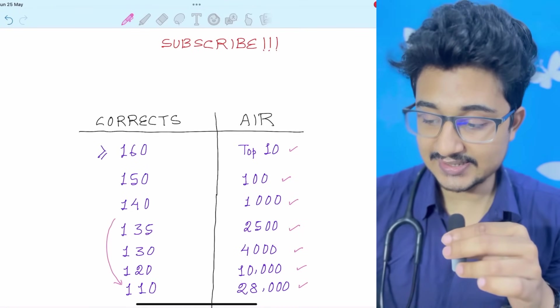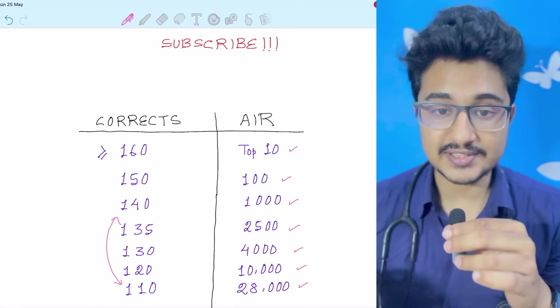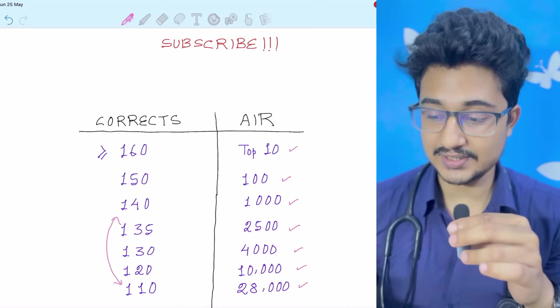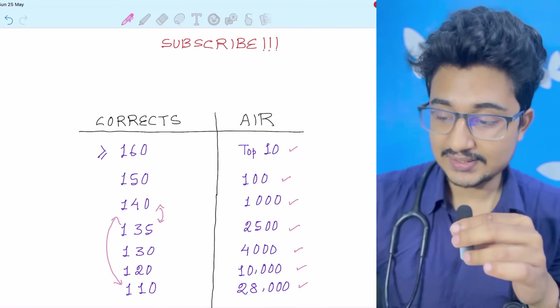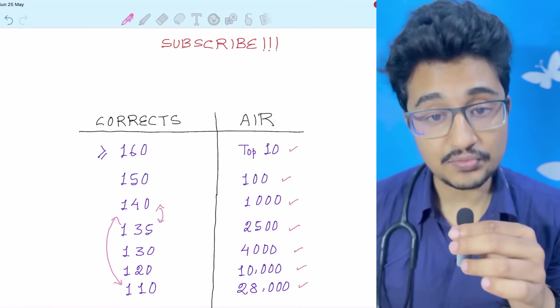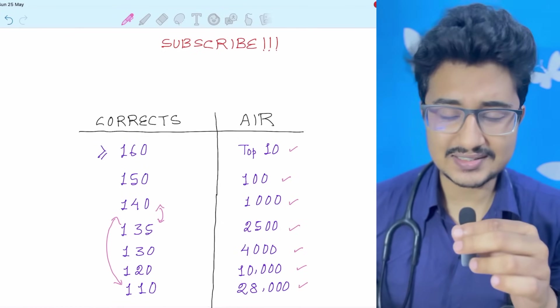In these 30 number of corrects only, there was a rank difference of 27,000. And in 5 corrects only, there was a rank difference of 1500. That is, top 1000 will get any clinical stream.